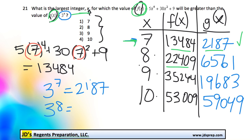When x is equal to 9, 35,000 is still bigger than 19,000. But this last one here, when x is 10, 53,009 compared to 59,049, this number is actually smaller, so that one doesn't work.